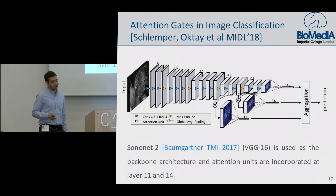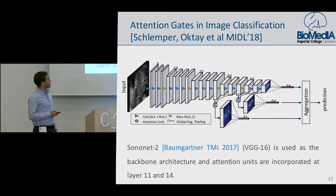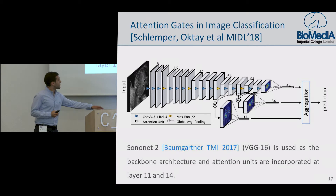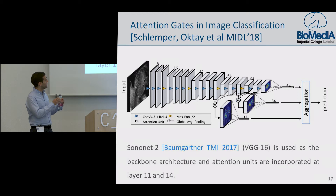Before I finish, I want to show some results on the image classification setting. This is work done together with a colleague of mine, Josh Lamper, and we have a poster session tomorrow. The same module can be used in image classification as well. The main idea is that instead of doing pixel-level gating, we can do adaptive pooling of the features. That way, we can learn task-specific regions and aggregate results only from these areas.